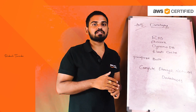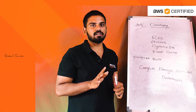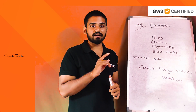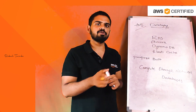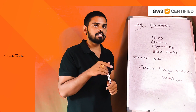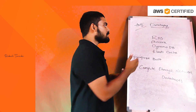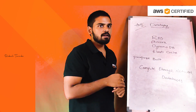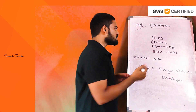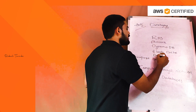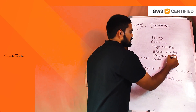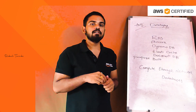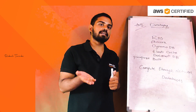Aurora is only available in AWS. Next is DynamoDB, also an AWS proprietary service. Then ElastiCache. We will also cover DocumentDB, which is essentially MongoDB — it is replicated and available in AWS under the DocumentDB name.